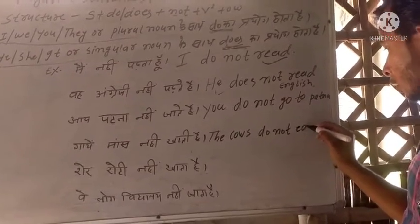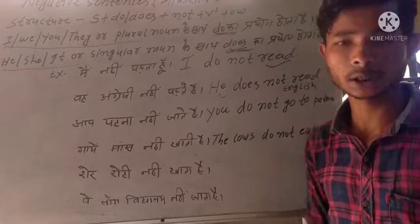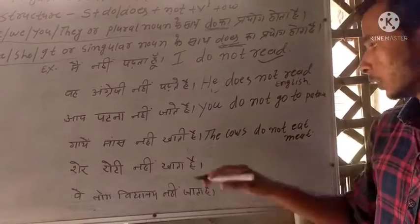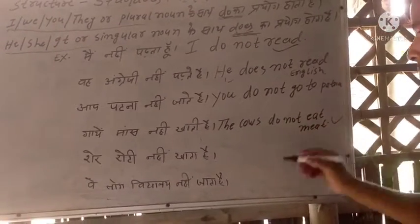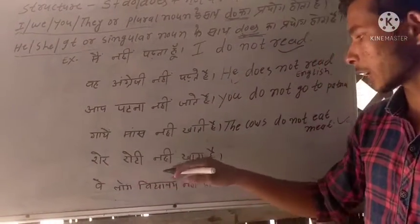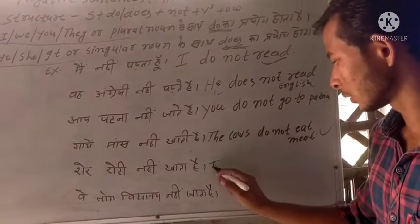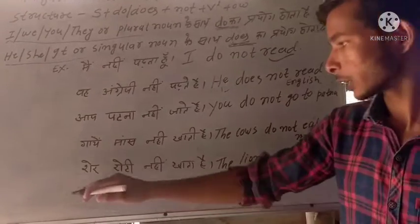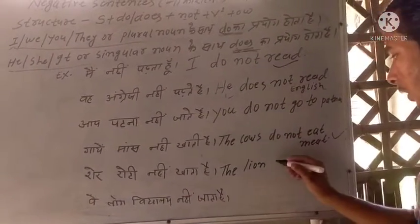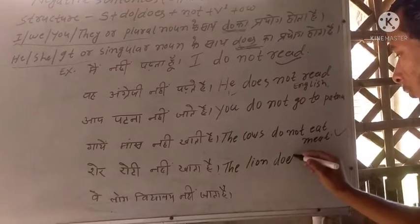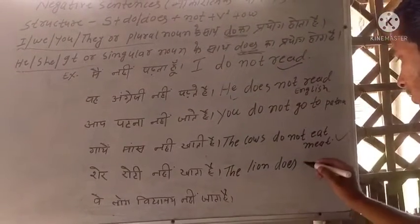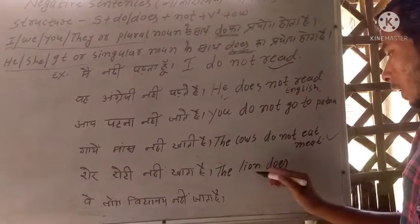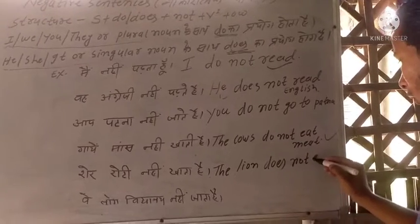Eat. What does that mean? Meat. Eat meat. He does not eat meat. I don't eat meat — this is a routine statement in present indefinite tense.